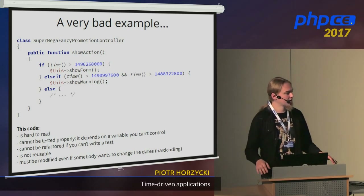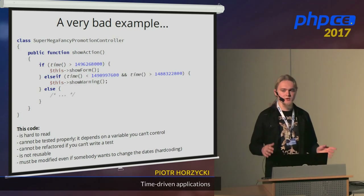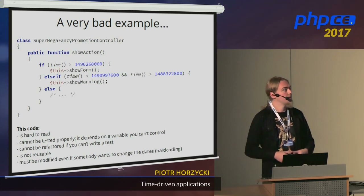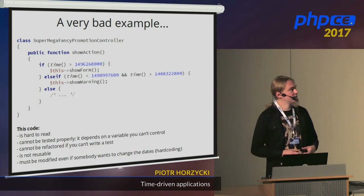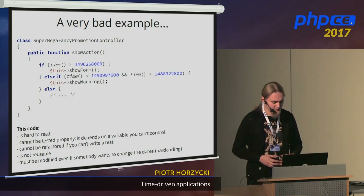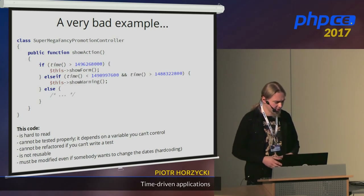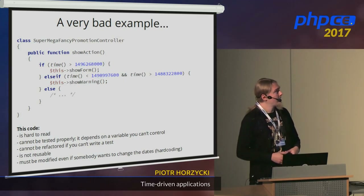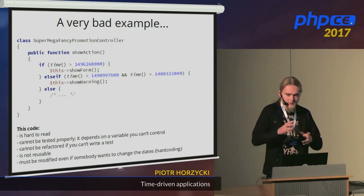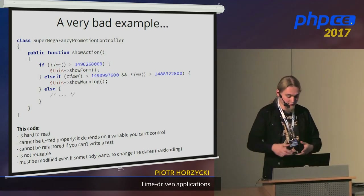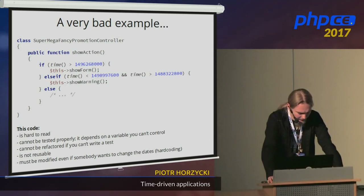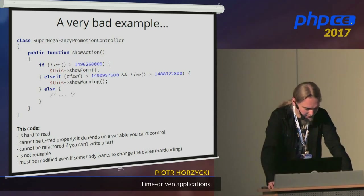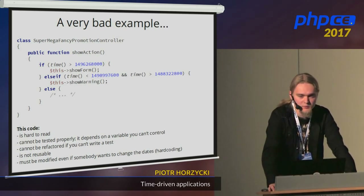When it comes to code that has to function under some date and time constraints, especially in the future, how do we make sure it will eventually work? In this example, we have a variable we cannot control — the system time. We can control the system time, but changing the system time on the test server is not a good idea. So we cannot write a test for this code, and if we can't have a test for it, refactoring is impossible as well.